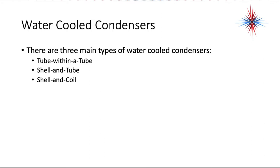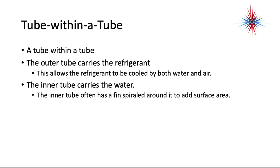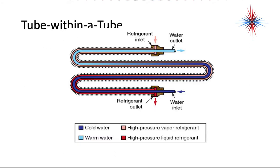Moving to water-cooled condensers, there are three main types: tube-within-a-tube, shell and tube, and shell and coil. A tube-within-a-tube is exactly that — two tubes, one smaller inside one larger. The outer tube carries the refrigerant, allowing it to be cooled by both the water and the air. The inner tube carries the water and often has a fin spiraled around it to add surface area.